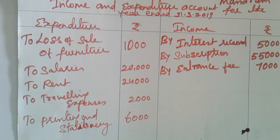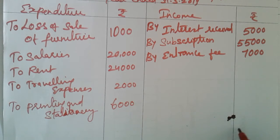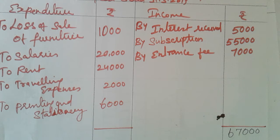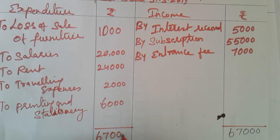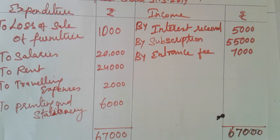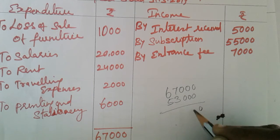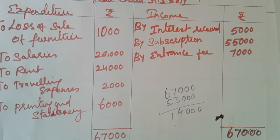Check all the items and the totals: income side total is 67,000 — that is 55,000 plus 5,000 plus 7,000 equals 67,000. Expenditure side total is 53,000. So 67,000 minus 53,000 gives us 14,000 rupees.